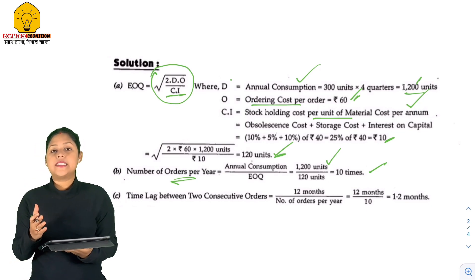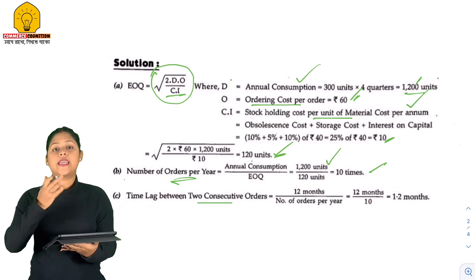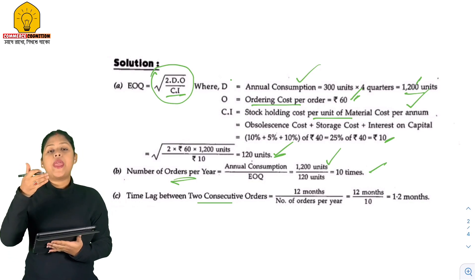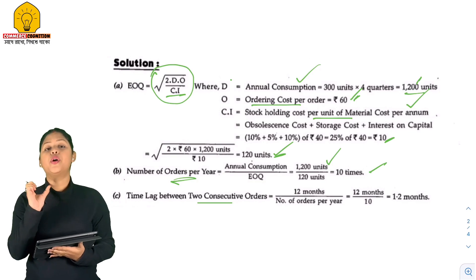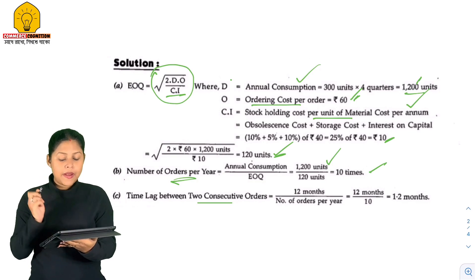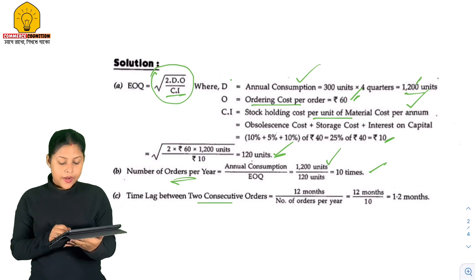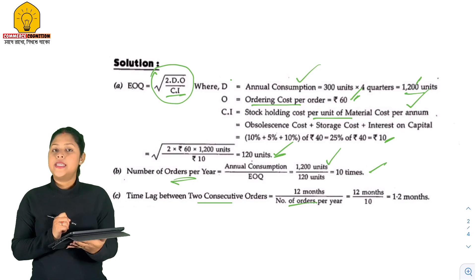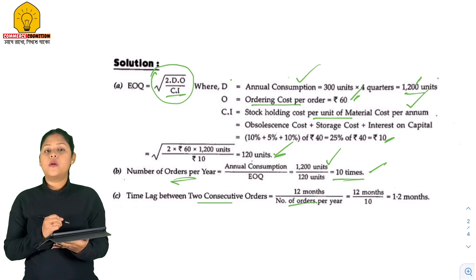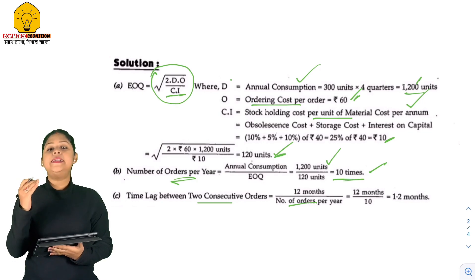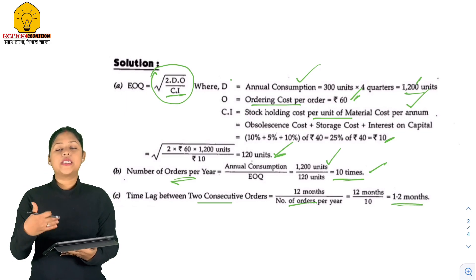The last thing to know is the time lag between two consecutive orders. This means the order will be placed 10 times, so these two orders will have a gap period. We go back to 12 months divided by 10 times, and that is 1.2 months. This is the gap at which we have to place the order.